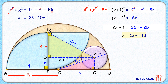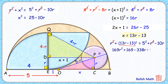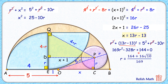Substituting x equals 13r minus 13 into the first equation x² equals 25 minus 10r, and expanding the bracket, after cancellations we get a quadratic in terms of r. Solving this quadratic using the quadratic formula, we get r equals (164 plus 16√10) / 169. Simplifying, we get r approximately equal to 1.27 centimeters, and that's our answer. I hope you enjoyed the solution — see you in the next video, tata bye bye.